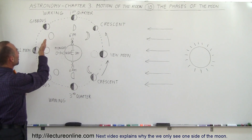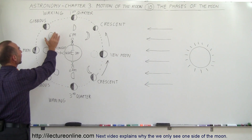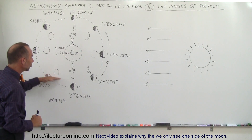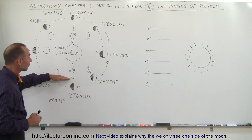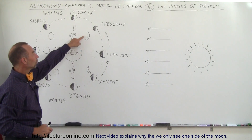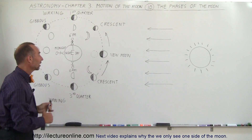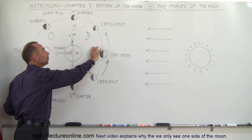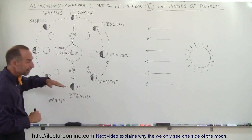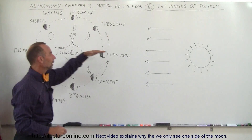If the Moon then continues its trip around the Earth, you can see that the Moon begins to get smaller again in shape. It now becomes a gibbous Moon again, and eventually it looks like half a Moon — we call that the third quarter. Then it starts showing up as a crescent shape again. Notice that the crescent is pointed in a different direction at the last part of its cycle, and finally it becomes a new Moon again, completing the phase. The Moon has gone around once, plus a little bit, to make sure it's back in the same place between the Earth and the Sun.